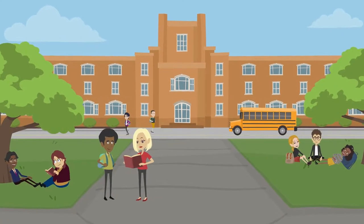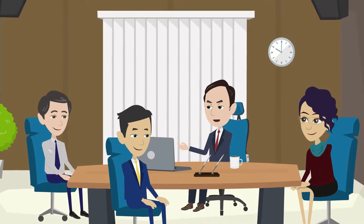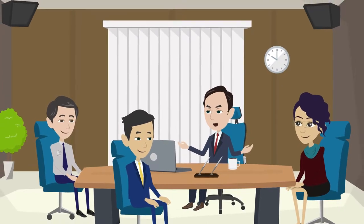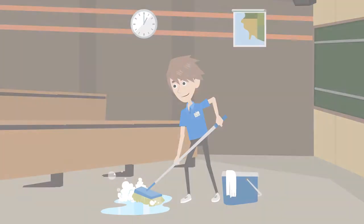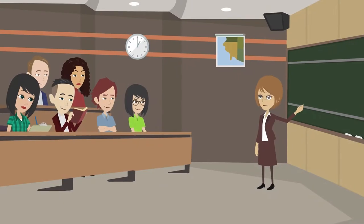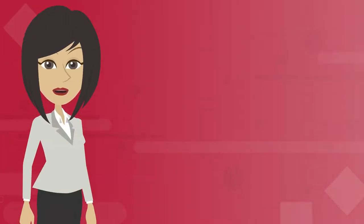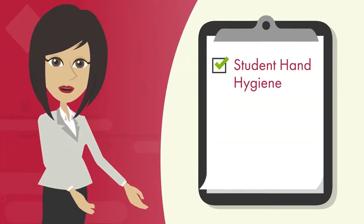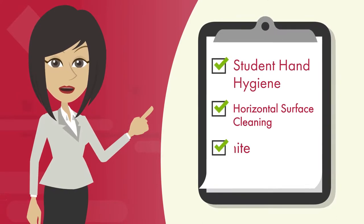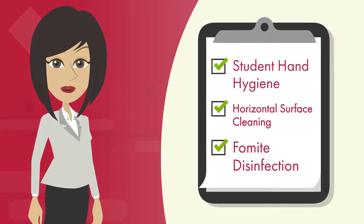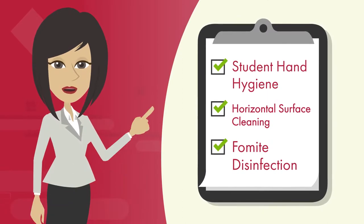With the new school year rapidly approaching, it's time for school administrators and faculty members to take a long hard look at the health and hygiene of their classrooms and take action to ensure a safe and productive new year. Three areas that must be on every classroom cleaning checklist are student hand hygiene, horizontal surface cleaning, and fomite disinfection.